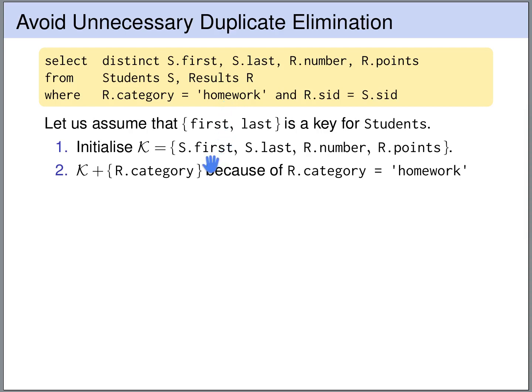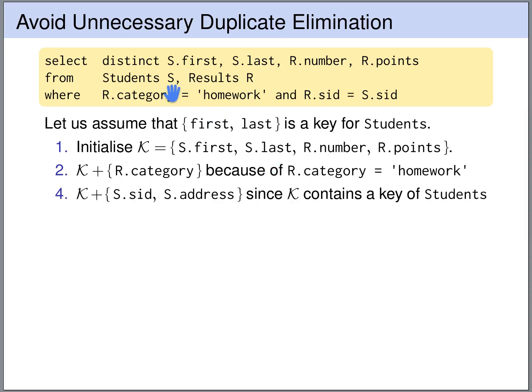Next, K contains a key of the students table — it contains the first and last name. Since first and last name are uniquely determined by the output and form a key of the students table, and the key determines all attributes in the table, we can add all other attributes of S to K: S.sid and S.address. Now K contains S.sid. In the WHERE clause we have R.sid equals S.sid. Since S.sid is uniquely determined and must equal R.sid, R.sid is also uniquely determined and is added to K.